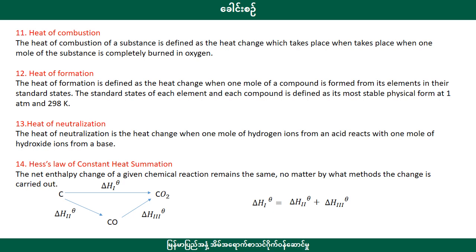For example, carbon's most stable physical form is graphite, so graphite is the standard state of carbon. For sulfur, the most stable physical form is rhombic sulfur, so rhombic sulfur is the standard state of sulfur at standard conditions.